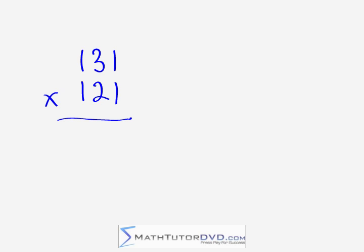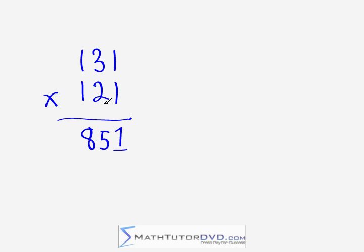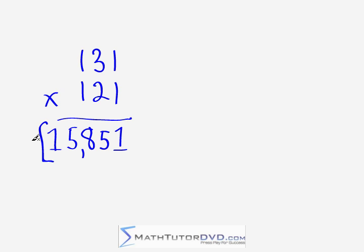Next problem: 131 times 121. Start in the right-hand column: one times one is one. Criss-cross: three times one is three, one times two is two, so three plus two gives five. Three-way criss-cross: this gives one, plus one, plus six — totaling eight, so we write down eight. Leading two-column criss-cross: three plus two gives five. Leading multiplication: one times one gives one. The final answer is 15,851. Notice that because the numbers were small enough, we didn't have to carry anything — it's quite impressive to write the answer down seemingly without any work.